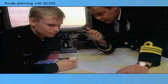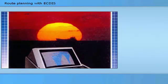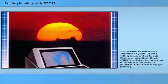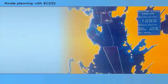Voyage planning can be done the traditional way by using up-to-date paper charts and other relevant nautical information. If an electronic chart display information system with approved and up-to-date electronic navigational charts is available, such a system offers many possibilities for professional and efficient voyage planning. In the following pages, a description of functions which may be found on an ECTIS system is described.